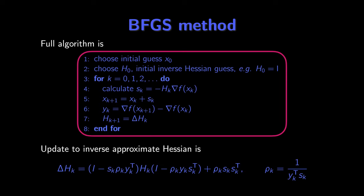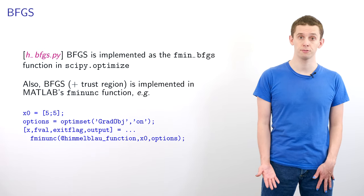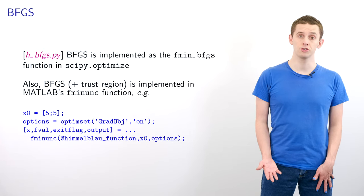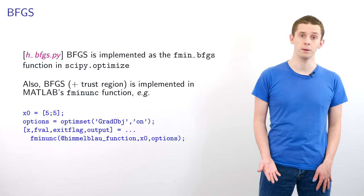If we do this, we end up with a modified BFGS method where we choose our initial guess x_0 and our initial inverse Hessian guess H_0. Using this we can now calculate our step s_k in terms of matrix multiplication using H_k, and write an update for the inverse approximate Hessian that follows from applying the Sherman-Morrison formula to the original BFGS Hessian update. This leaves us with a very efficient method for finding local minima of a function that doesn't require the exact Hessian. The BFGS method is implemented in the fmin_bfgs function in scipy.optimize, and BFGS with a trust region extension is implemented in MATLAB's fminunc function.